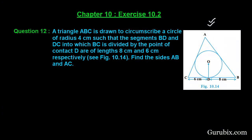Welcome friends. Let us solve question number 12 of Exercise 10.2 of Chapter 10. The question says: a triangle ABC is drawn to circumscribe a circle of radius 4 centimeters such that the segment BD and DC, into which BC is divided by the point of contact, are of length 8 centimeters and 6 centimeters respectively. Find the length of sides AB and AC.